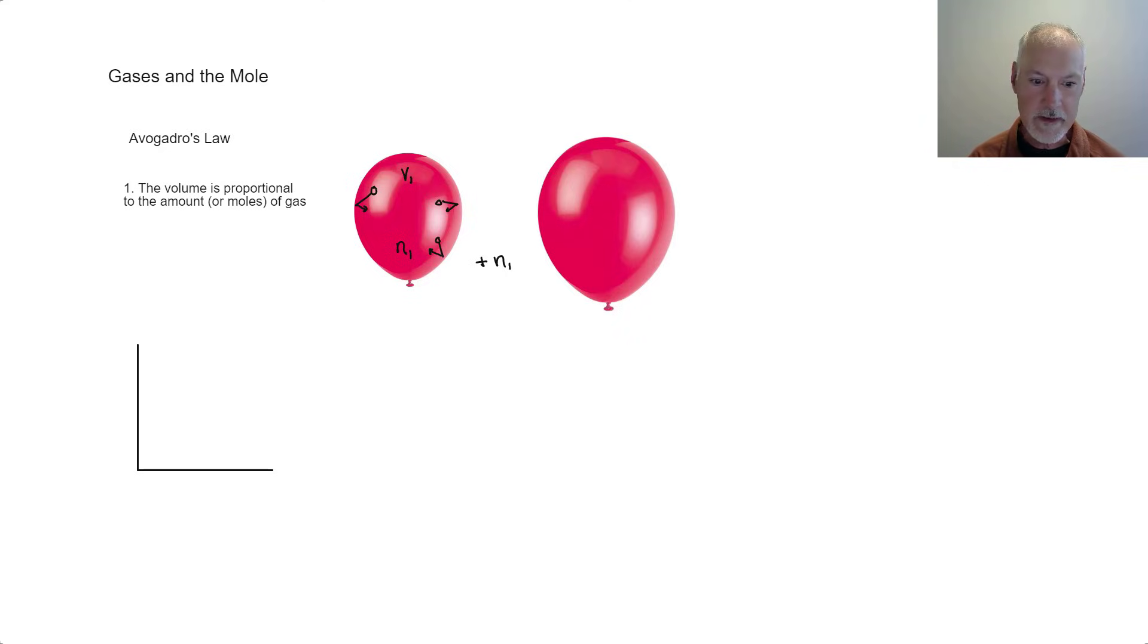The volume would increase, so we would now have V2, and it would equal twice the original volume because I have now present twice the number of moles present. That's what's meant by this phrase that the volume is proportional to the number of moles.